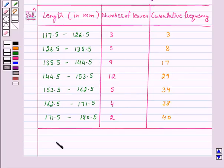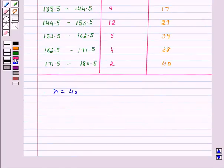So, n is 40. Therefore, n by 2 is equal to 20.